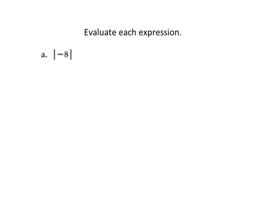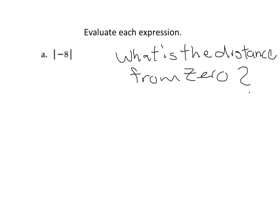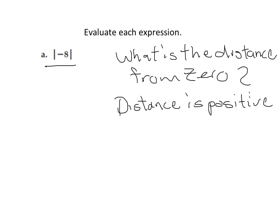We're going to evaluate each expression. For expression A, we evaluate the absolute value of negative 8. Ask: what is the distance of negative 8 from 0? It is 8 spaces. Distance is always positive, so we drop the absolute value bars and the answer is 8.